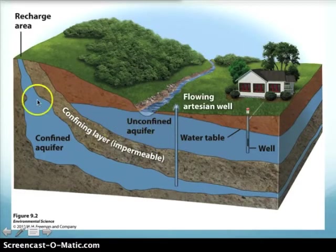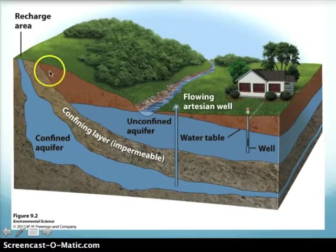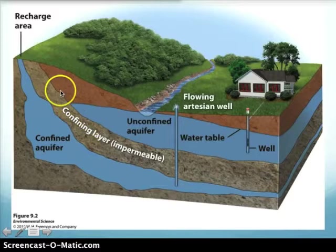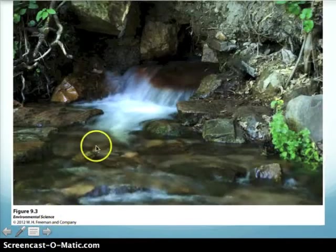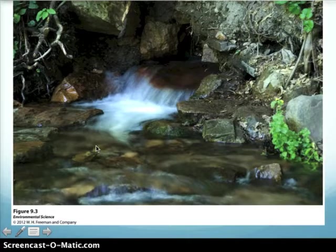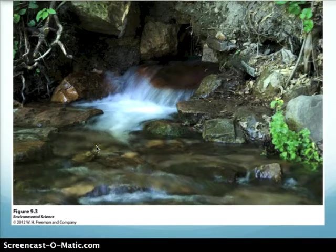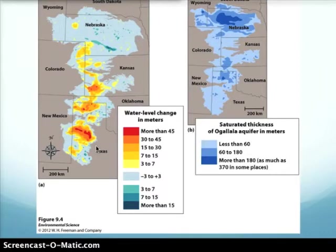The recharge zone for an unconfined aquifer covers a large area — even water not directly above the aquifer will percolate down into it. A confined aquifer has a much smaller recharge zone. One last groundwater term: a spring is essentially an aquifer that naturally percolates up to the surface — nothing more than that.